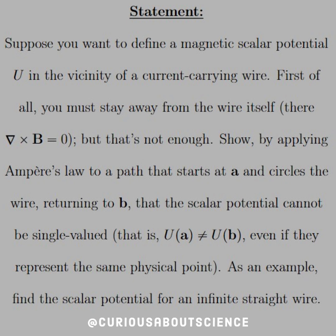Show by applying Ampere's law to a path that starts at A and circles the wire returning to B, that the scalar potential cannot be single-valued. That is, U of A cannot equal U of B, even if they represent the same physical point. As an example, find the scalar potential for an infinite straight wire.